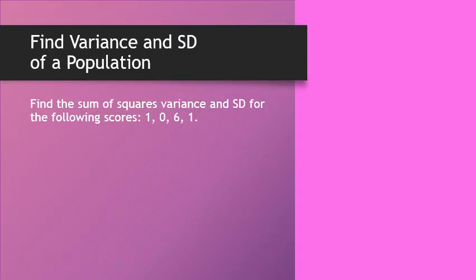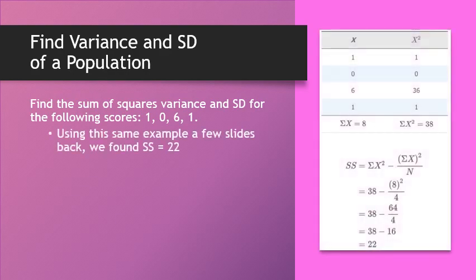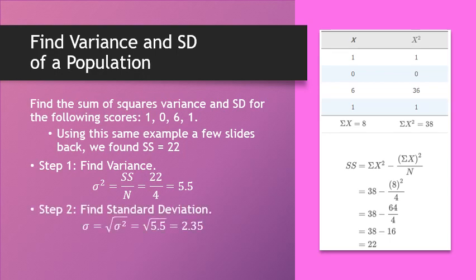Let's look at finding a population standard deviation and variance. We used this example a few slides back and already found that the sum of squares was equal to 22. If we're going to carry that further and find the variance, we write the variance equation: variance is equal to sum of squares over n. Substitute in what we have: 22 divided by 4, because there are four scores, giving us a variance of 5.5. To find standard deviation, we simply take the square root of the variance and get 2.35.